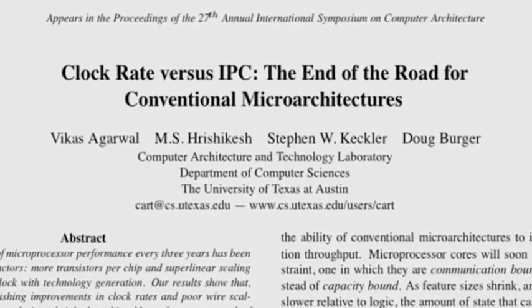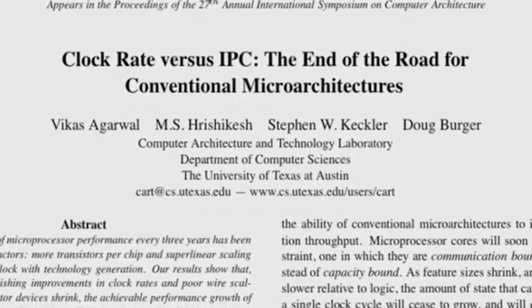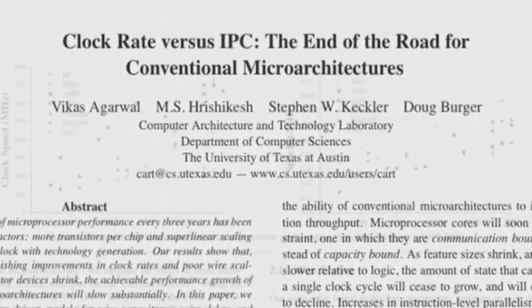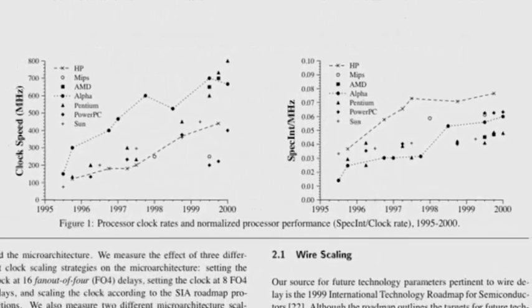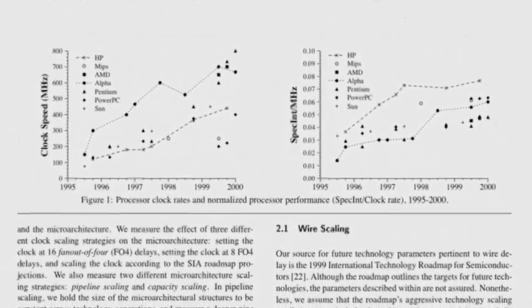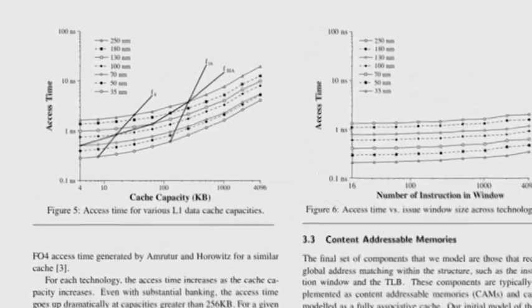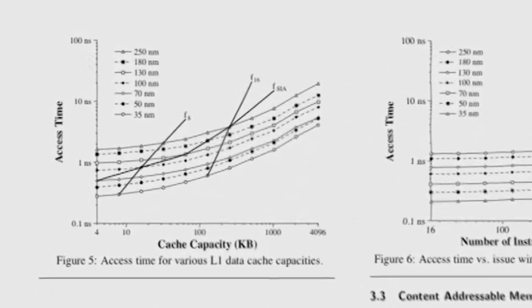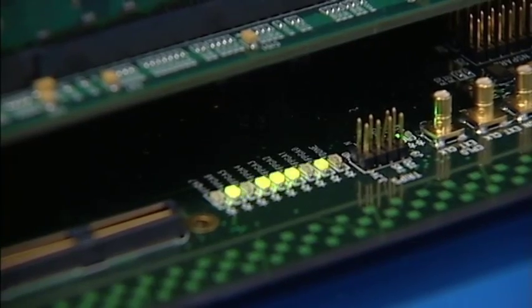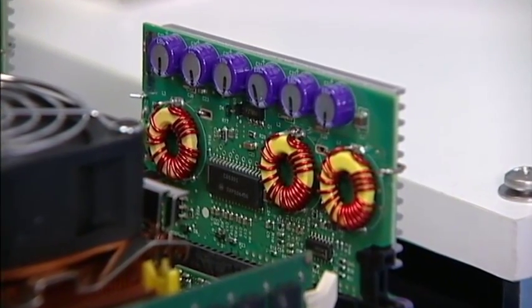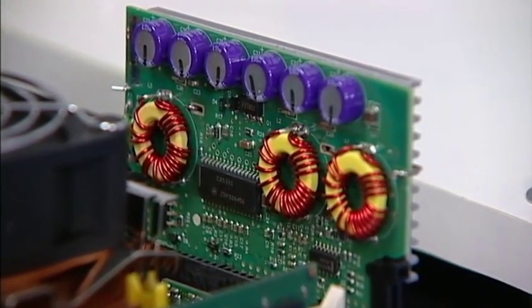Doug and Steve made a controversial discovery. In 2000, they published a paper that said computers would reach their performance limits. Doug and Steve warned the tech industry it needed to stop designing microprocessors for computers that had large centralized components. The wires and switches on those components were becoming overloaded.